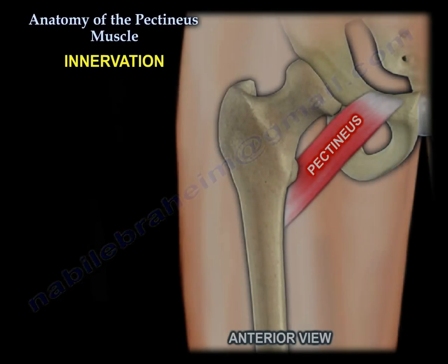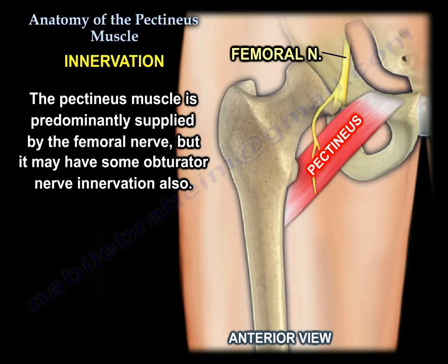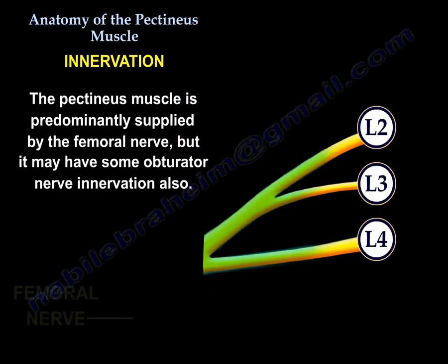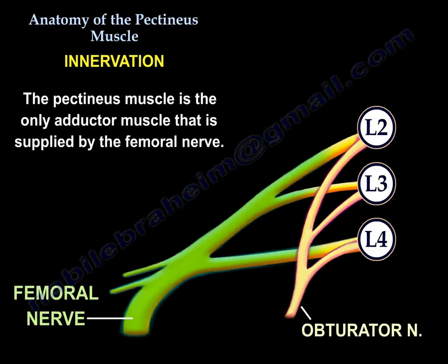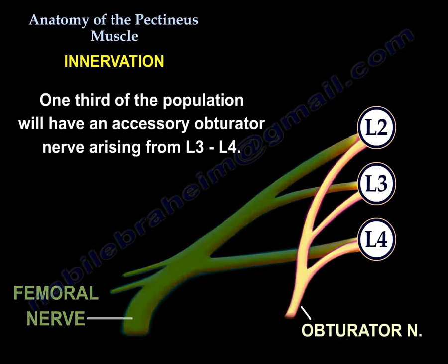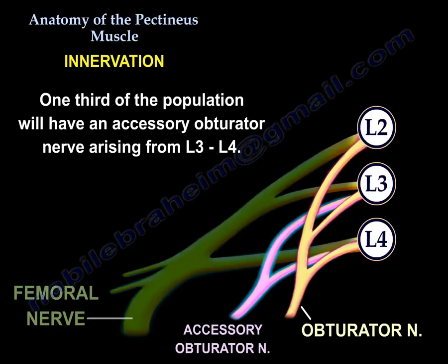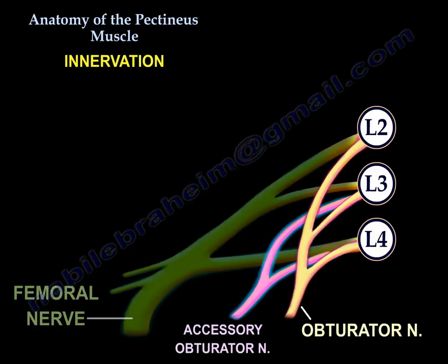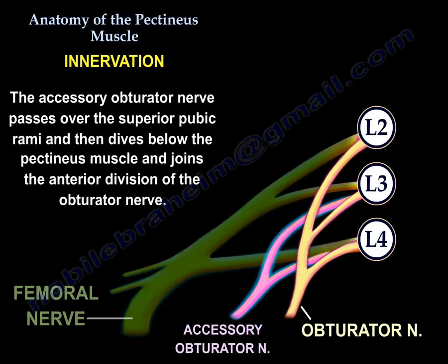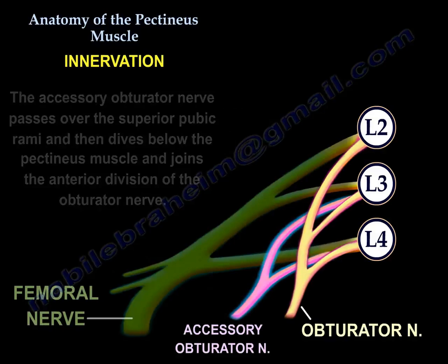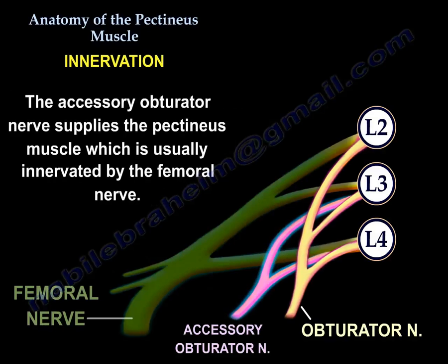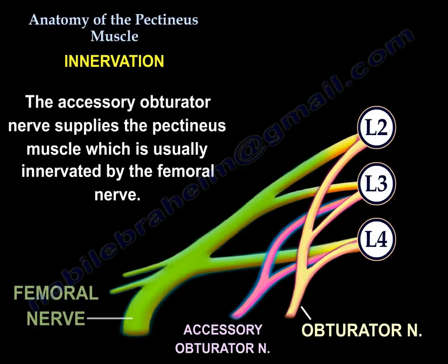Nerve supply: the pectineus muscle is predominantly supplied by the femoral nerve, but it may have some obturator innervation also. The pectineus muscle is the only adductor that is supplied by the femoral nerve. One-third of the population will have an accessory obturator nerve arising from L3 and L4. The accessory obturator nerve passes over the superior pubic ramus and then dives below the pectineus muscle, joining the anterior division of the obturator nerve. This accessory obturator nerve supplies the pectineus muscle, which is usually innervated by the femoral nerve.